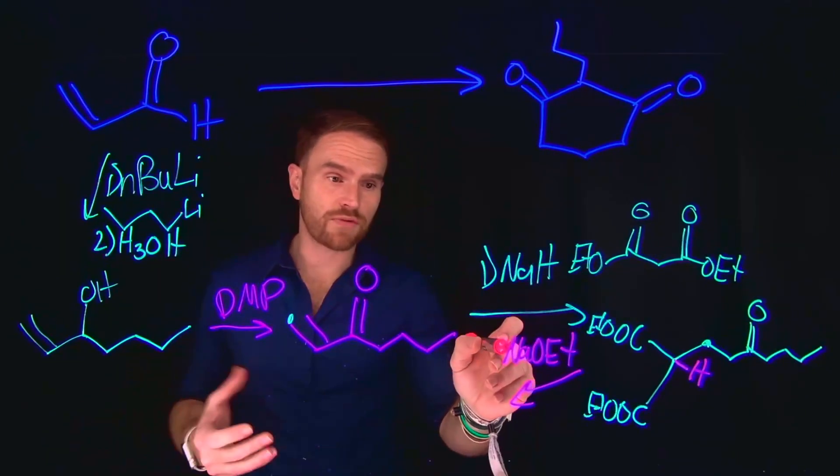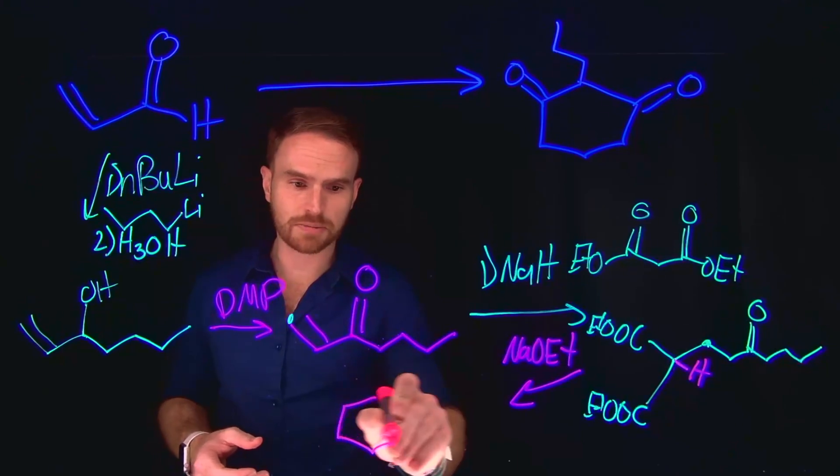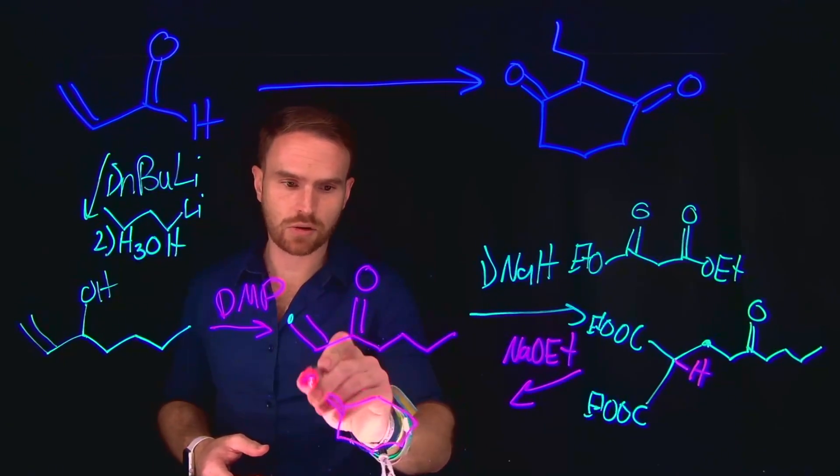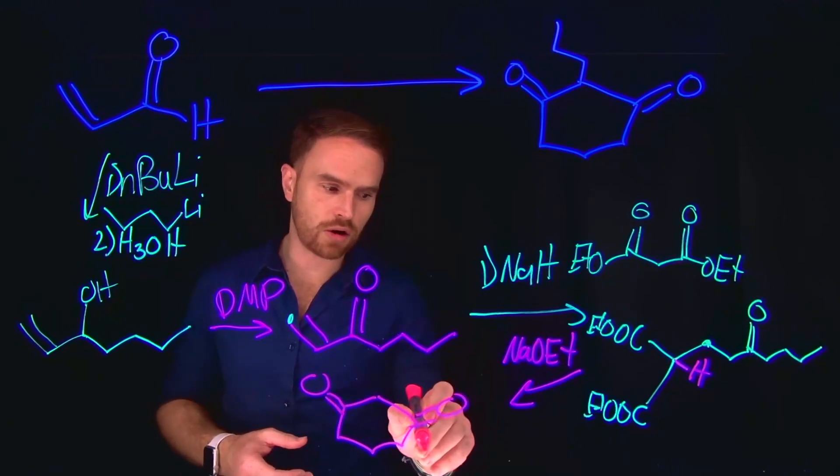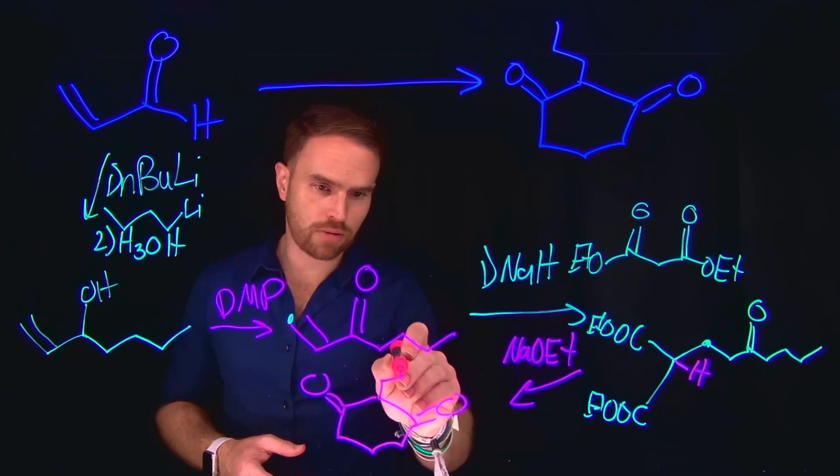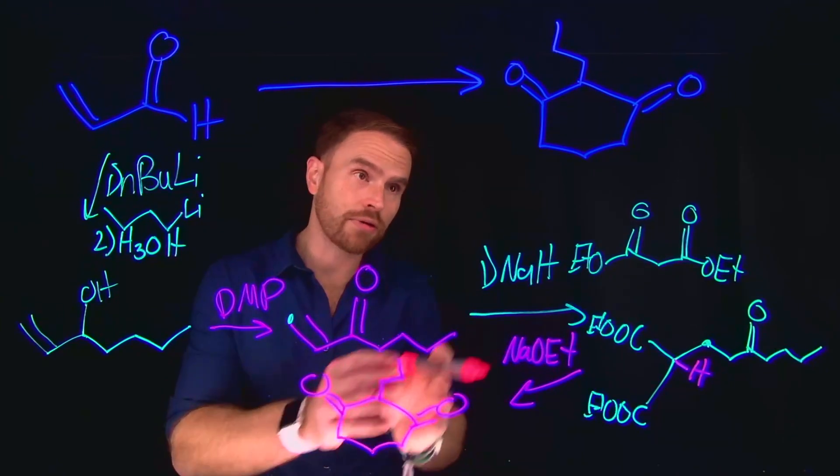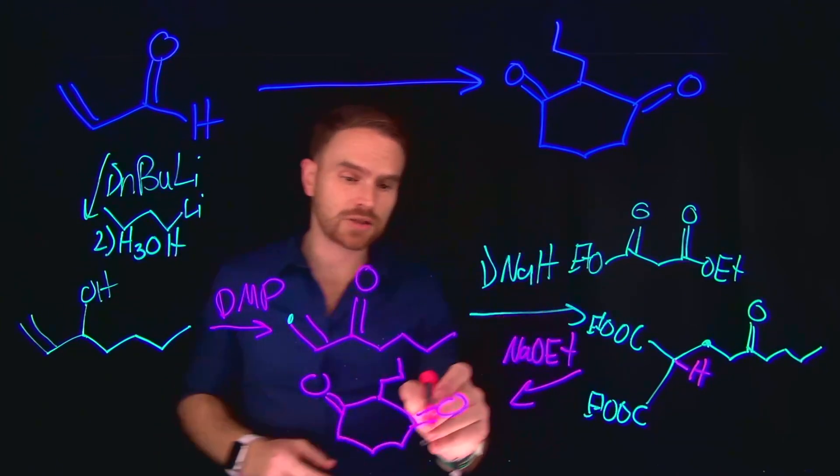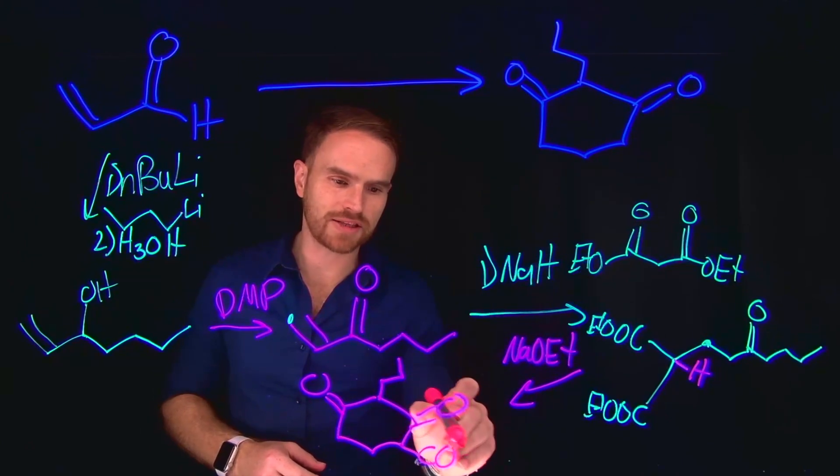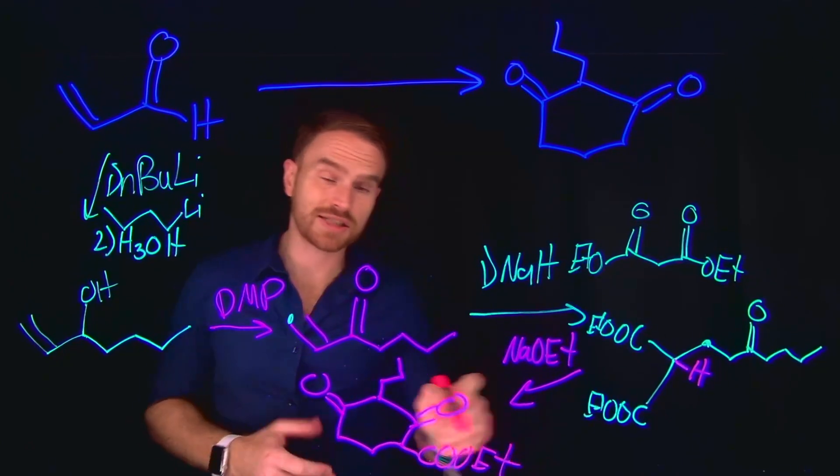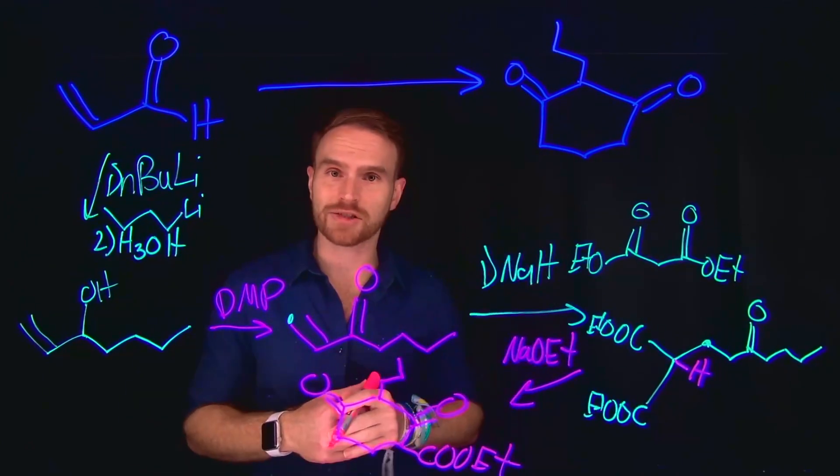So from here, we end up with most of our final products. We end up with our six-membered ring, which has two ketones on it. We also still have our four-carbon chain, which is how we got this side over here. The only thing that's extra from here, all the way to our product, is going to be we still have an ester at this position. So this ester needs to be removed in the final step to get to our final product.